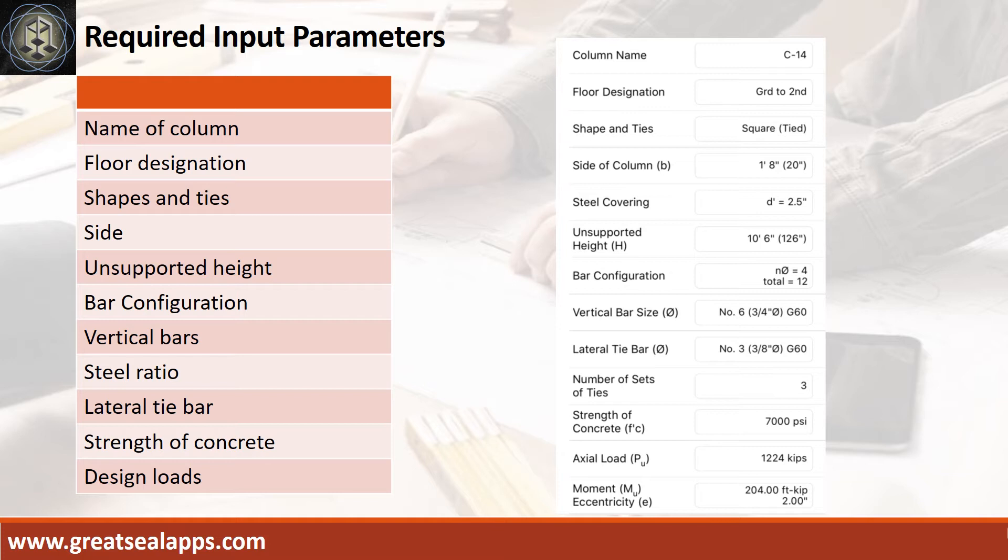Bar configuration, 4 bars per face. Vertical bars, 3/4 inch diameter at grade 60. Lateral tie bars, 3/8 inch diameter at grade 60. Strength of concrete, 7,000 PSI. Factored axial load, 1,224 kips, factored moment, 204 foot kips, and eccentricity, 2 inches.